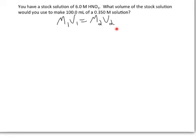So I know what I want the concentration and the volume of the final solution to be. I want it to be 0.350 molar, and I want it to have 100 milliliters. And I know that the stock solution is 6 molar, so I just need to solve for V1, which is the volume that I would put in that volumetric flask so that the final solution would have this concentration.